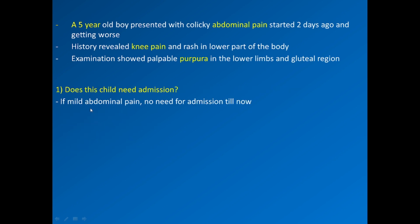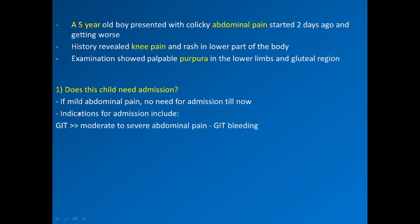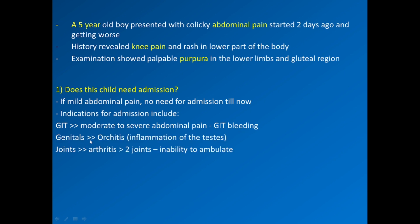Does this child need admission? With mild abdominal pain, no admission is needed based on this presentation. However, indications for admission include: GI problems such as moderate to severe pain or GI bleeding; genital problems like orchitis; joint arthritis involving more than two joints or inability to ambulate; renal issues such as proteinuria — microscopic hematuria alone is not a reason for admission, but proteinuria always is; and neurological or pulmonary involvement.